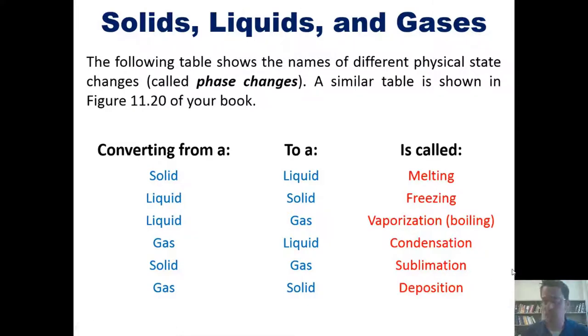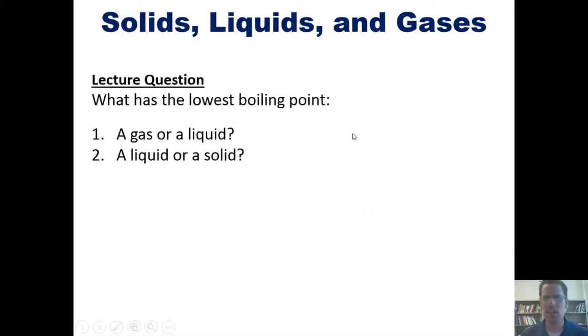That brings us to a great, if not intellectually insulting, lecture question: which has the lowest boiling point, first between a gas and a liquid, and second between a liquid and a solid? I realize this might seem very rudimentary, but I hope you'll make sure that you know how to answer it so that you have a firm grasp on how to relate boiling point to physical state.